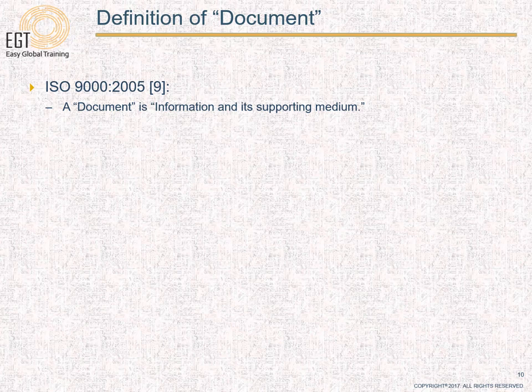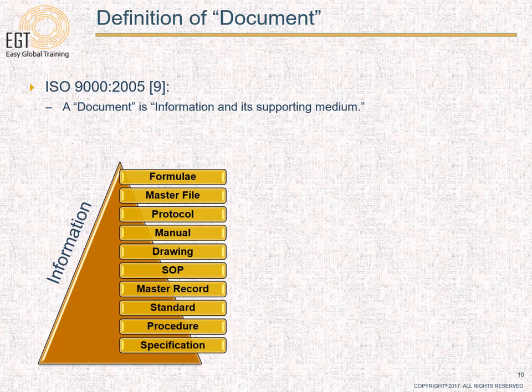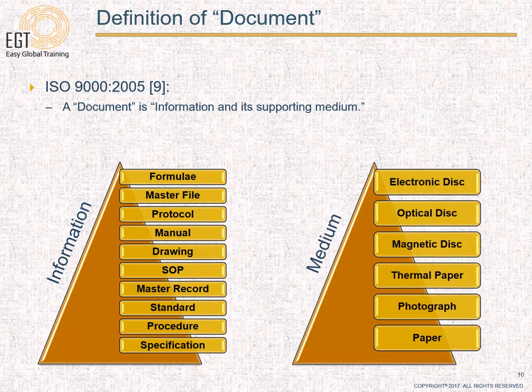As indicated in ISO, a document is information and its supporting medium. Generally, documents tell you to do some activities and explain how to do different things. Examples of information include formula, master file, protocol, manual drawing, SOPs, master records, standards, procedures, and specifications. Examples of media include electronic, optical, or magnetic discs, thermal paper strips, photographs, and paper.